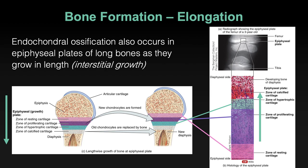Chondrocytes are growing in size now that they are more numerous, and then as they burst and rupture, they calcify. The zone of calcified cartilage is where these cells get too large, calcify, and burst — at which point they become new bone. So: resting chondrocytes become more numerous, then grow in size, and when they get too big, they burst and calcify, forming new bone.